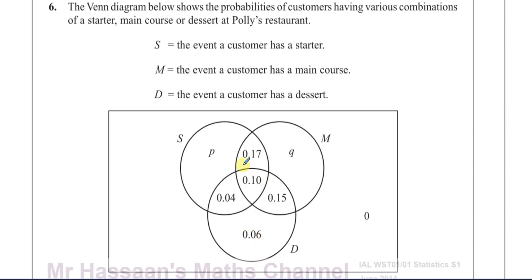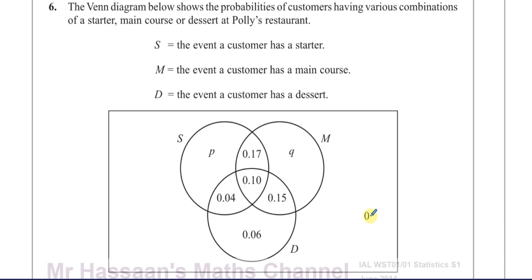There are two parts that are missing: P and Q. The probability of somebody choosing none of these three is zero, so they all choose either a starter, a main course, or a dessert, or some combination of the three. No one chooses something outside of those.